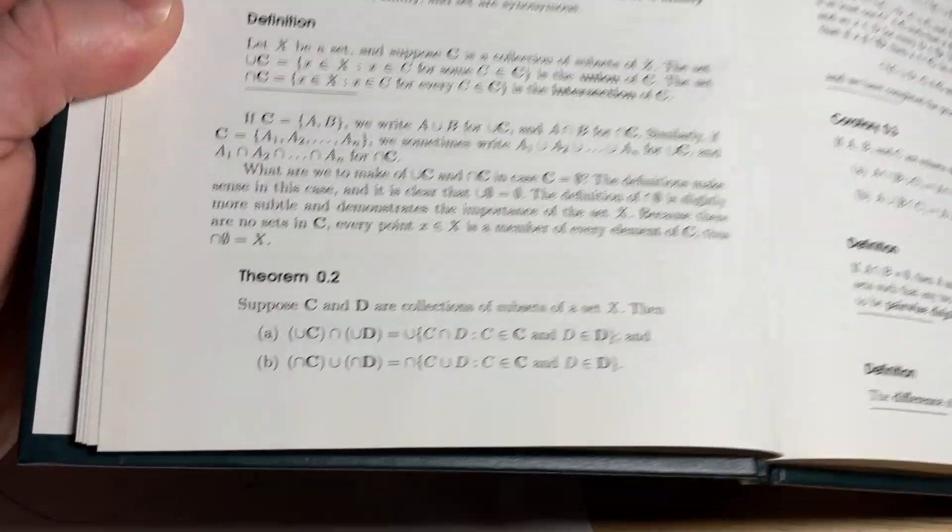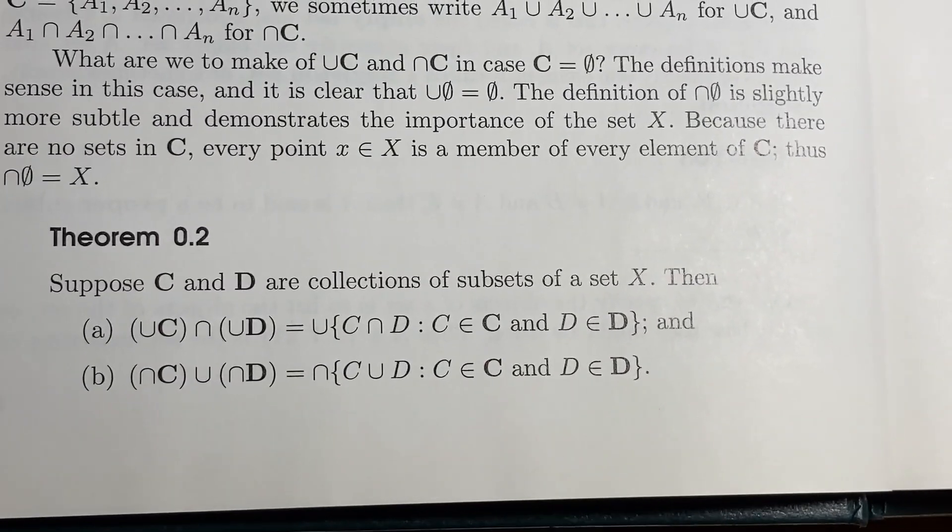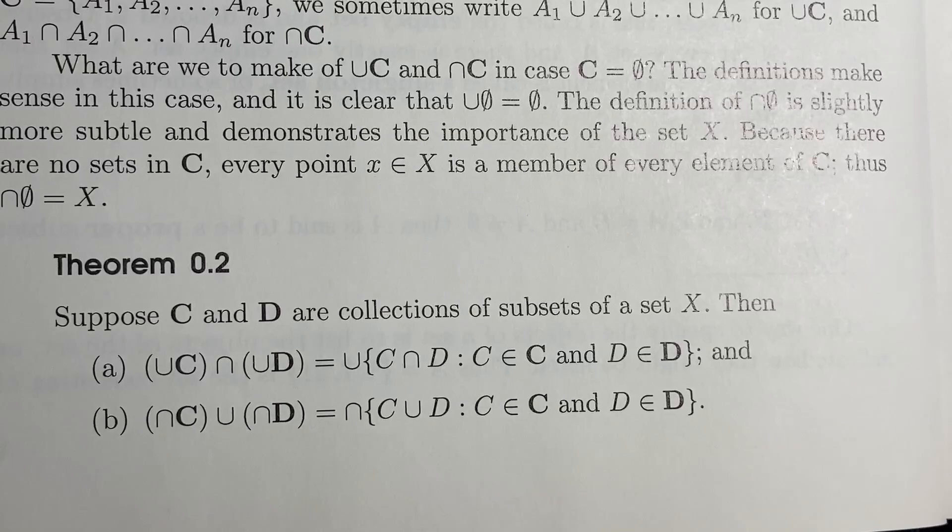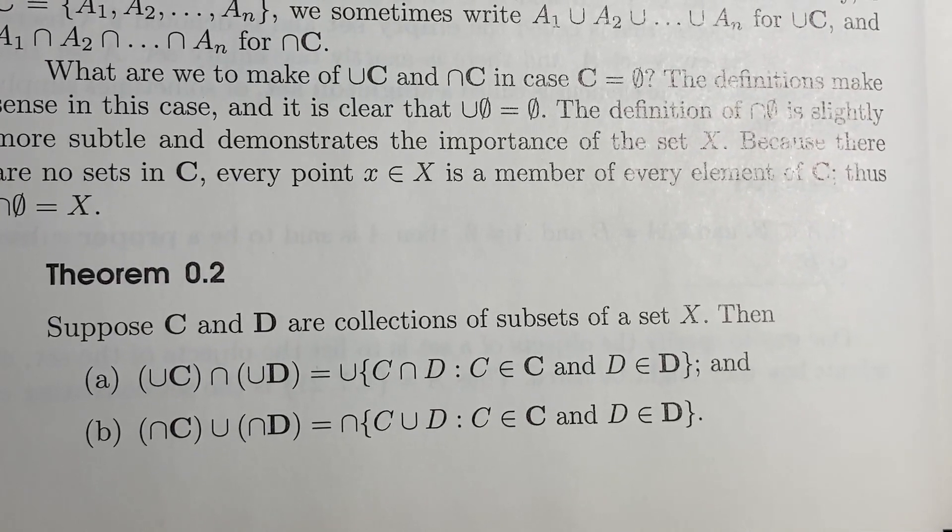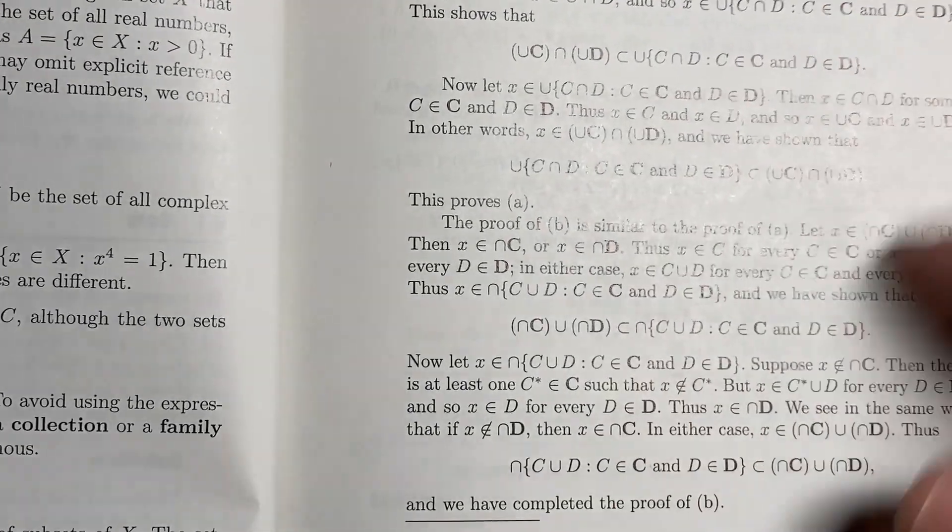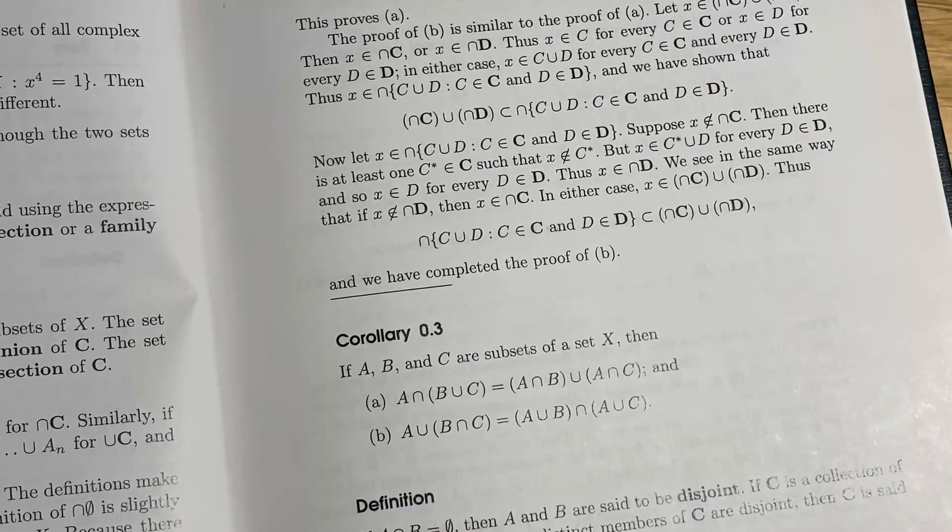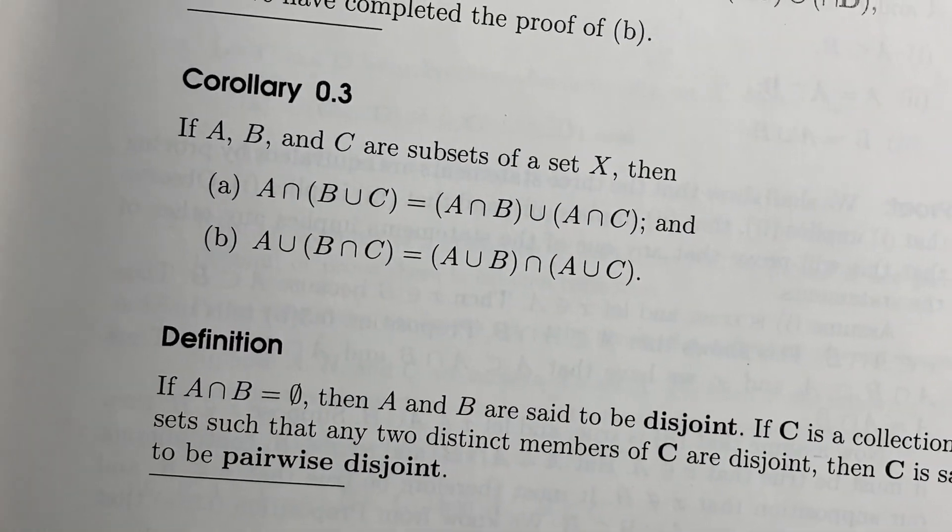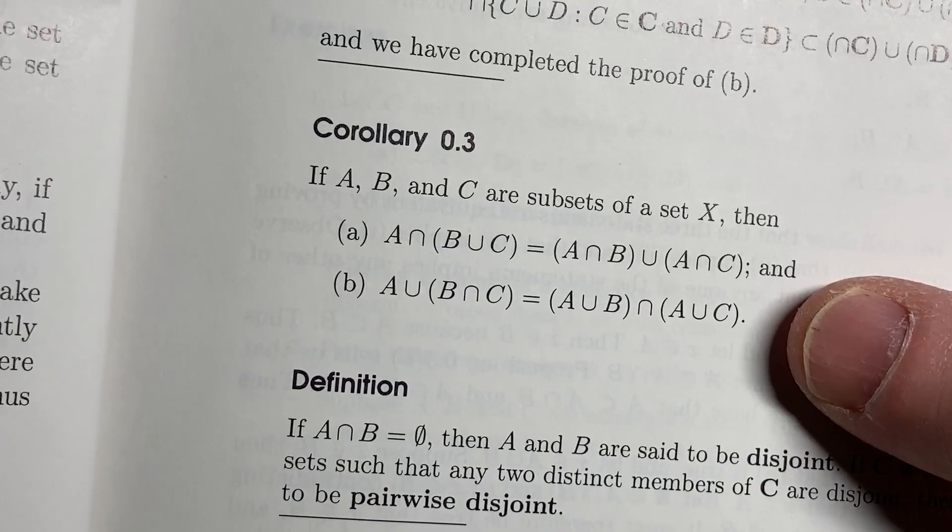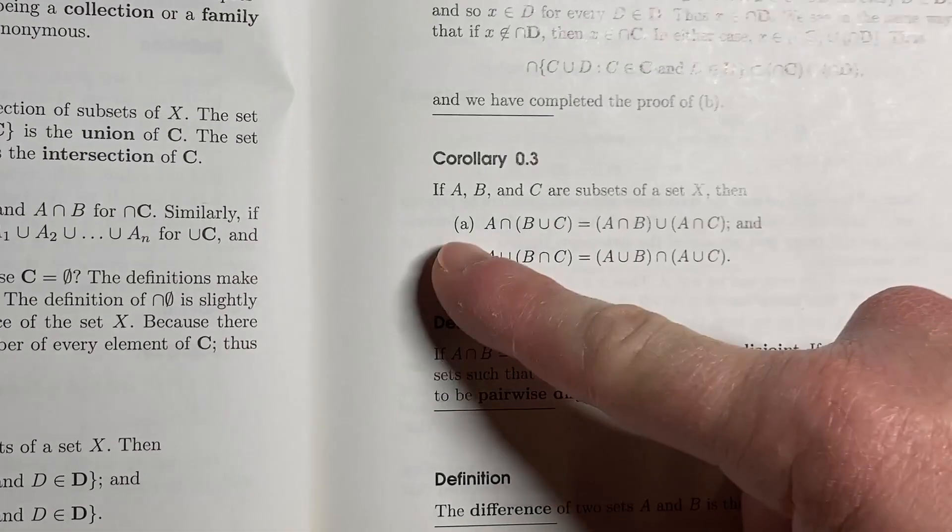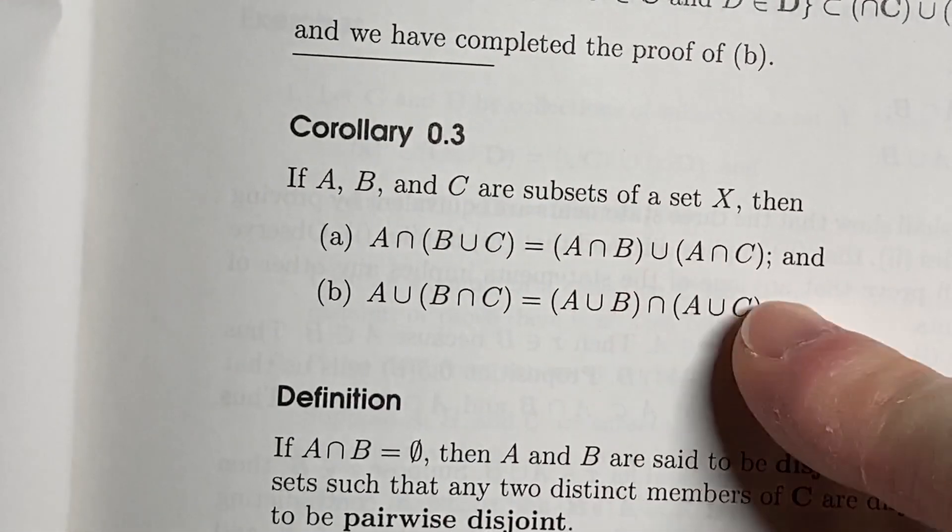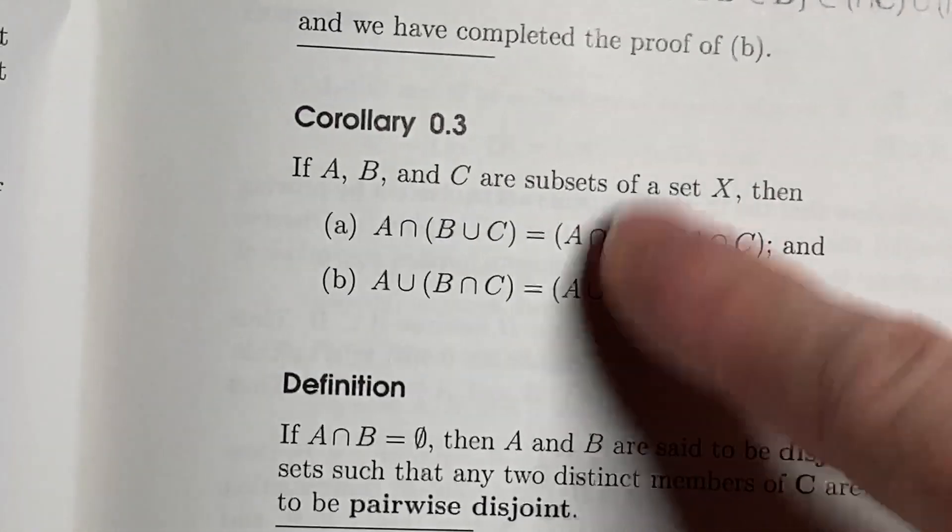And the proofs are pretty clean. Let's look at this one here. This is a set theory proof. Suppose C and D are collections of subsets of X. The union of C intersected with the union of D is equal to the union of C intersect D. So it's just a general statement about the intersection of unions. And it goes through here and it gives you the proof. And then here's a corollary of that. So they prove a more general statement and then they just prove this one here, which is this distributive property, basically. You basically have A being distributed through the union. So A intersect B union C is A intersect B union A intersect C. So pretty intuitive stuff.